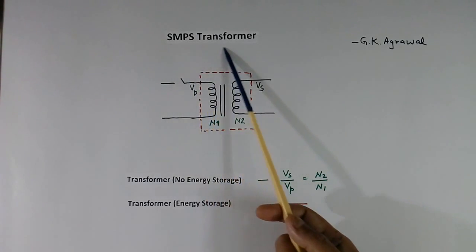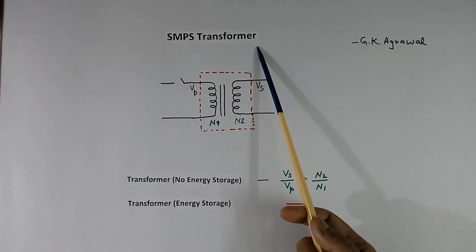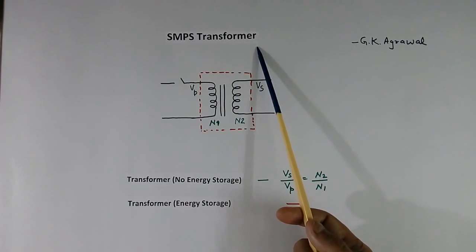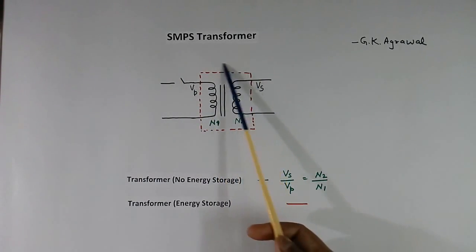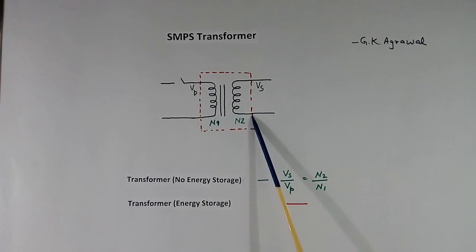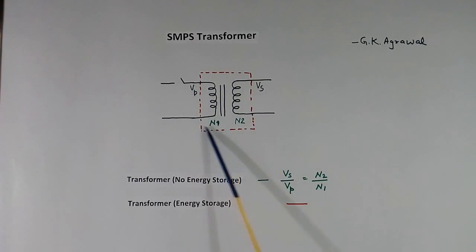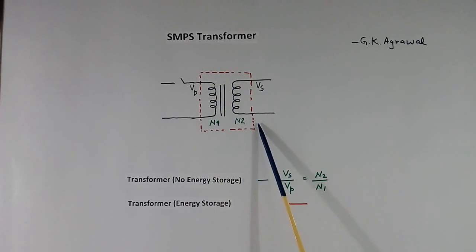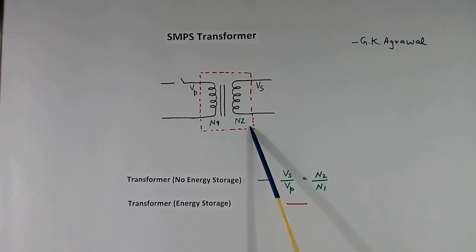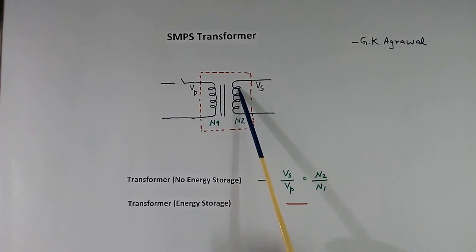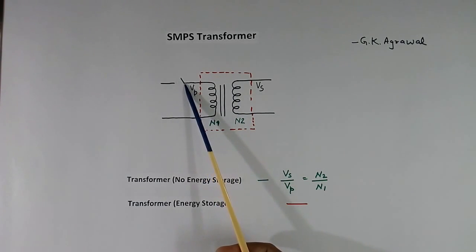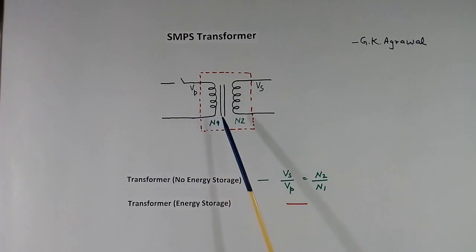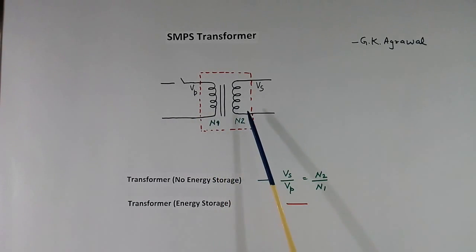Today's topic is the SMPS transformer, also called the switch mode transformer. It is called a switch transformer because an on-off switch action is needed to operate the transformer. Power transfer in the transformer is controlled by controlling the on-off time at high frequency.